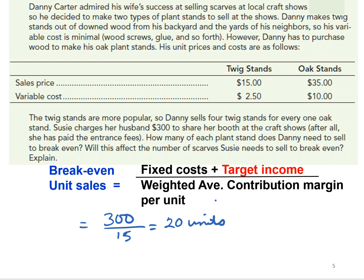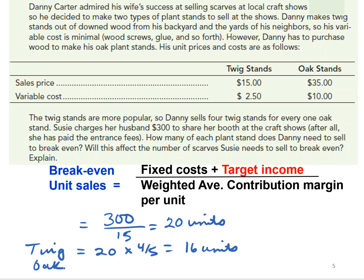Now we determine how many of each unit. For twig stands: we need to sell 20 total units and they're at a ratio of 4 to 5, so 80% need to be twigs, which is 16 units. For the oak stands, at a ratio of 1 to 5, or 20%, Danny needs to sell 4 units.